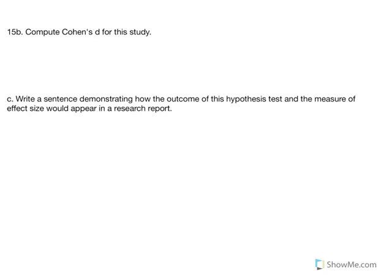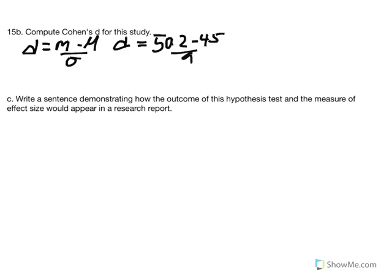We calculate Cohen's d for this example. d equals sample mean minus mu divided by standard deviation — what we want to identify is the mean difference expressed in standard deviation units. So: 50.2 minus 45 divided by 9 gives us a Cohen's d of 0.58, which given our table is considered a medium effect.